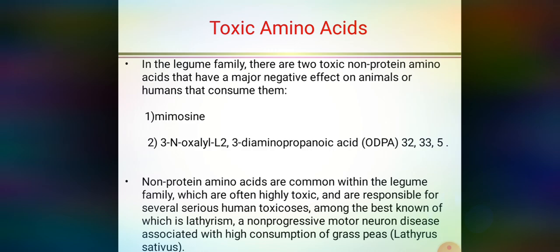The next topic is toxic amino acids — what types are present in legumes. In the legume family, there are two toxic non-protein amino acids that have major negative effects on animals or humans that consume them. The first one is mimosin, and the second is beta-N-oxalyl-L-alpha,beta-diaminopropionic acid (ODPA). We have already covered ODPA in the second part of anti-nutritional factors.